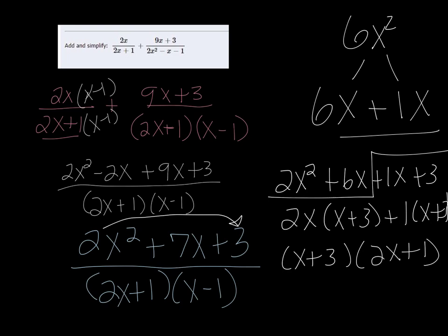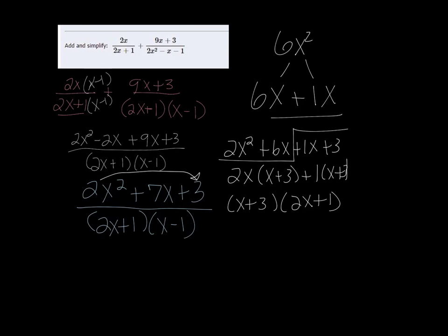Not surprising because we do have that 2x plus 1 in the bottom there. So changing this to its factors, I have x plus 3 times 2x plus 1 over 2x plus 1 times x minus 1.